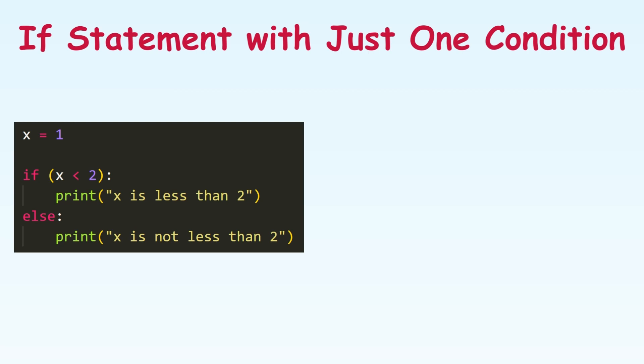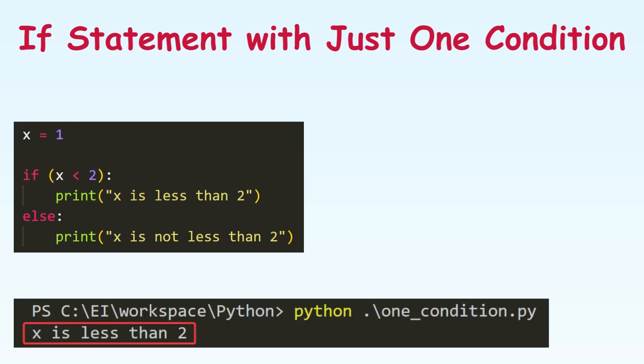If it is the case we simply print out x is less than 2, and if it is not the case then we print out x is not less than 2. Running this code we get x is less than 2. Simple so far right?